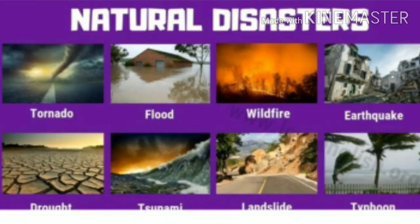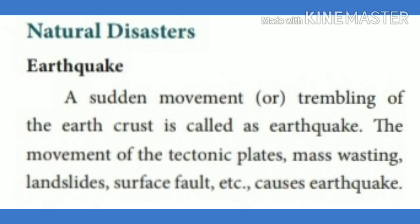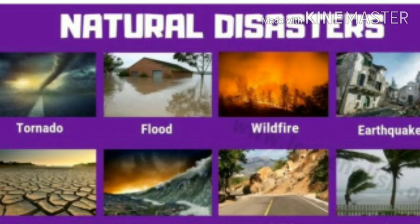Now we are going to see natural disasters. First, we are going to see earthquake. A sudden movement or trembling of the earth's crust is called an earthquake. The movement of the tectonic plates, mass wasting, landslides, surface faults, etc. cause earthquakes. That is why natural disasters are happening in the world.